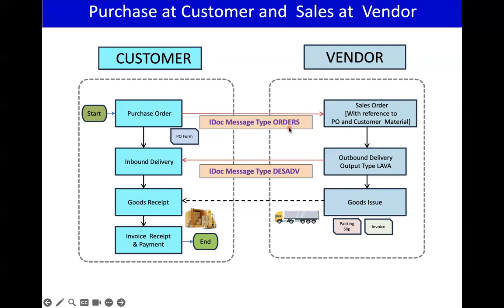The IDoc message types — IDoc type is different, IDoc message type is different. For example, the IDoc type is ORDERS05 and for delivery it is DESADV — something like DELVRY03. We can check those technical things later. Let's try to understand the business process and how it happens.